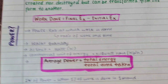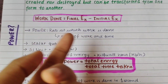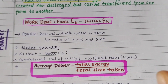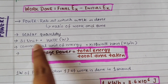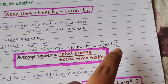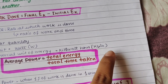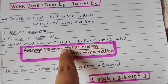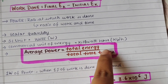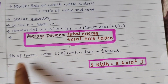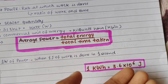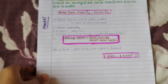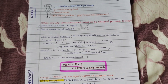Now the third concept: power. Power is the rate at which work is done — the ratio of work to time. It's a scalar quantity with only magnitude. SI unit is watt, and the commercial unit of energy is kilowatt-hour (kWh). Average power equals total energy divided by total time taken. One watt of power is when one joule of work is done in one second. One kilowatt-hour equals 3.6 × 10⁶ joules. And that's the whole lesson revised in about six minutes.